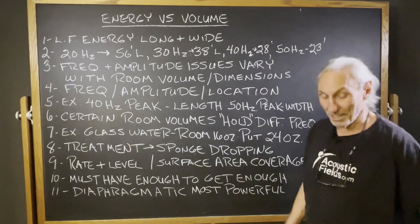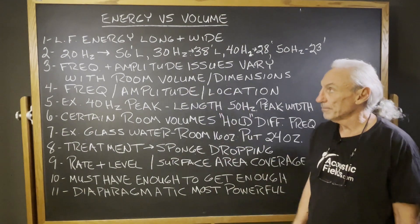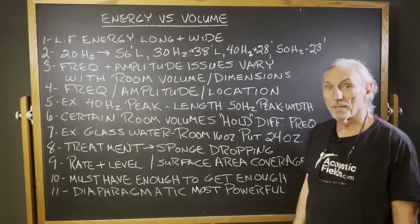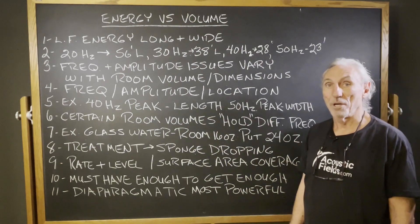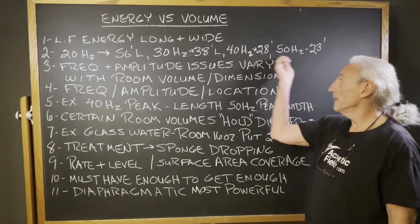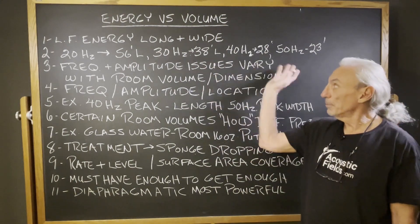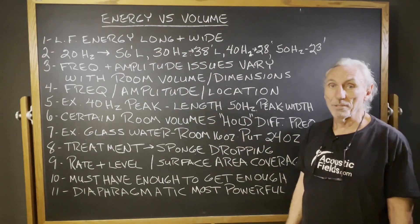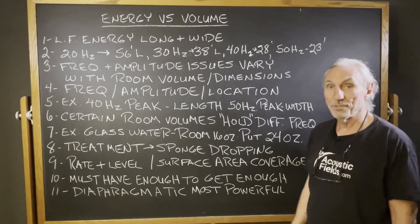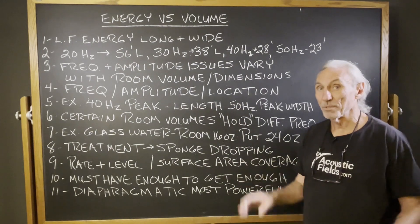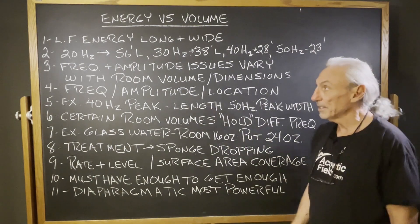Low frequency energy is long and wide. Look at 20 hertz — 56 feet long, probably half that high. 30 hertz, 38 feet long. 40 cycles, 28 feet. 50 cycles, 23 feet. So in order for full wavelengths to fit, we need rooms that have certain proportions to allow this energy to fit in the room. It never really fits, but it'll fit better in certain widths, heights, and lengths than in other rooms.